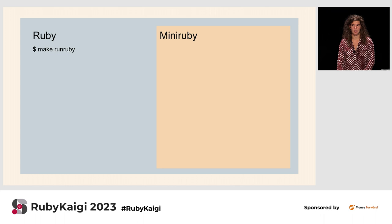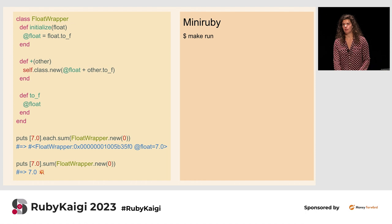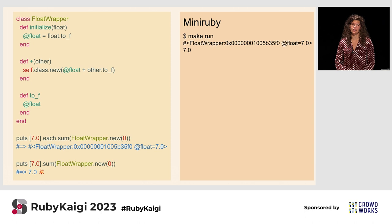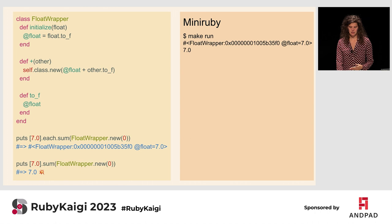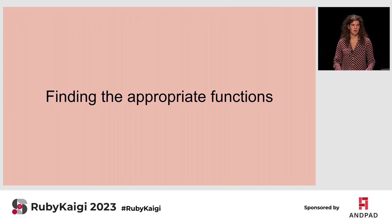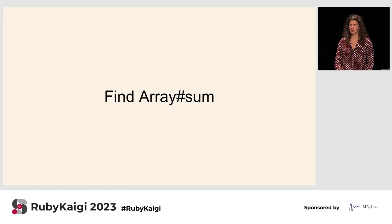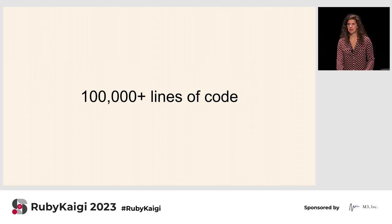If we call `make run`, as expected, in the enumerable sum case we get the expected result, but in the array sum case we get 7.0. The next thing we'll want to do is find the appropriate functions — figure out where this is actually happening so we know how we can look into fixing it. What we're really looking for is where array sum lives, since that's what we think is broken.